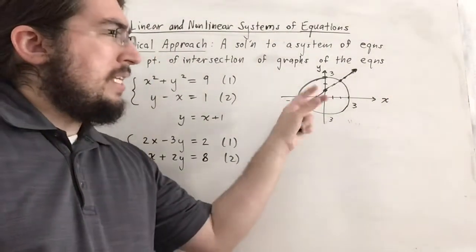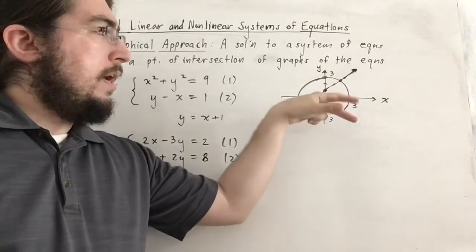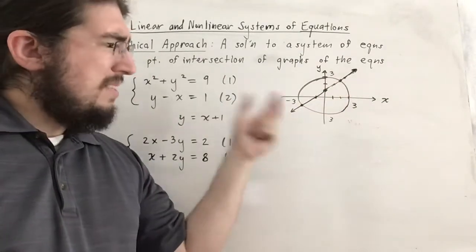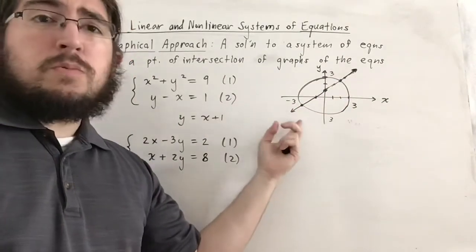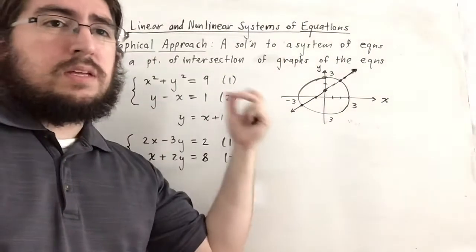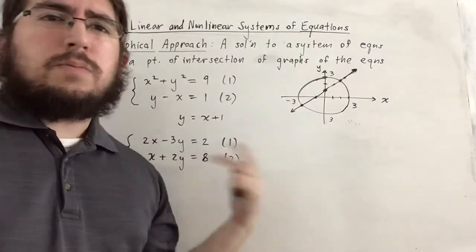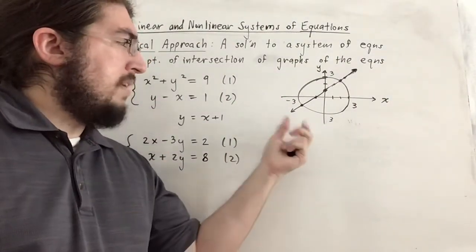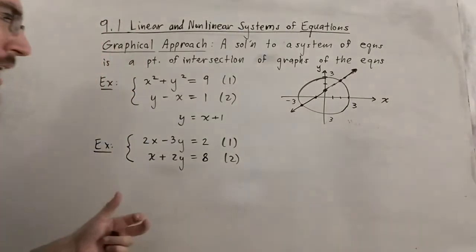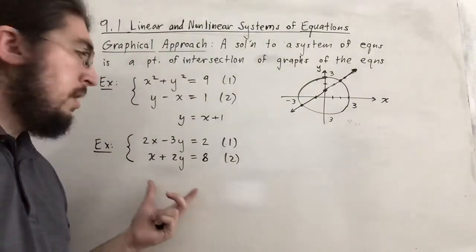There are two solutions: one in the first quadrant and one in the third quadrant. I won't state the exact solutions since finding them takes some tinkering. The system above was nonlinear due to the circle equation. The second system is definitely a linear system — both equations are lines.